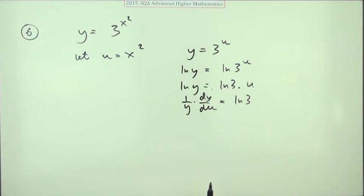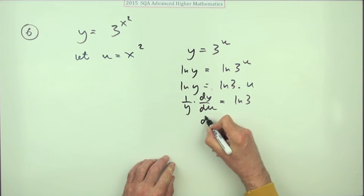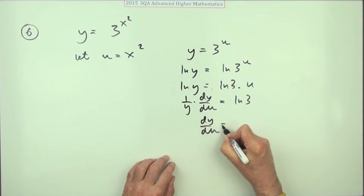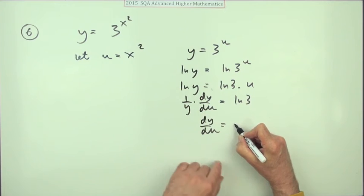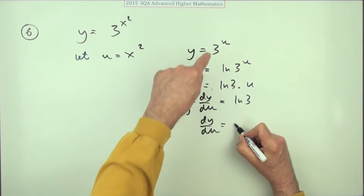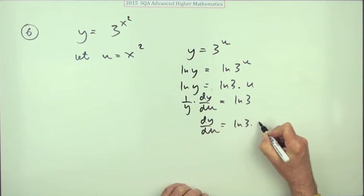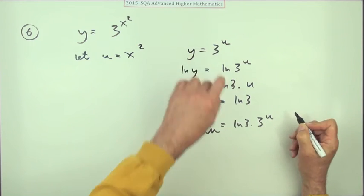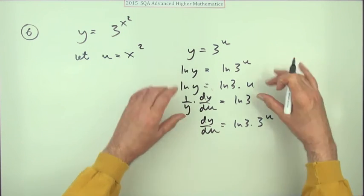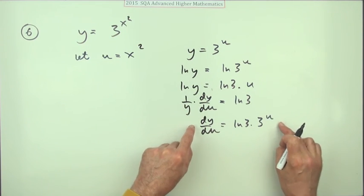But since it's expressed in terms of this new variable, that would actually be dy/du would equal just ln 3 in this case, because u was just power one. So you've got dy/du, taking the y across, and just to save some space because it's very long, would be ln 3 times 3 to the u.